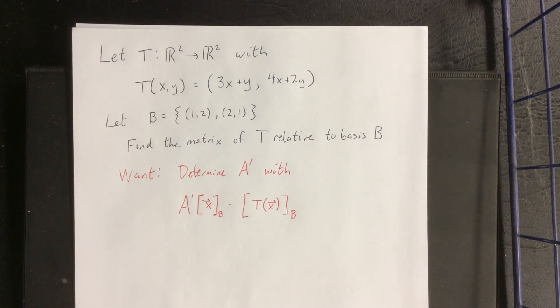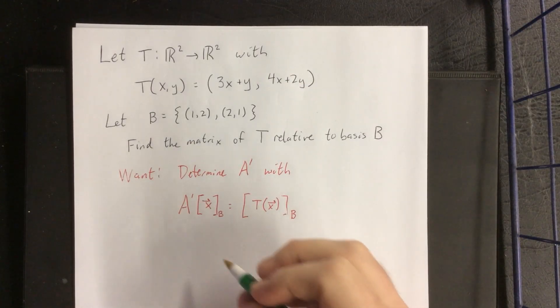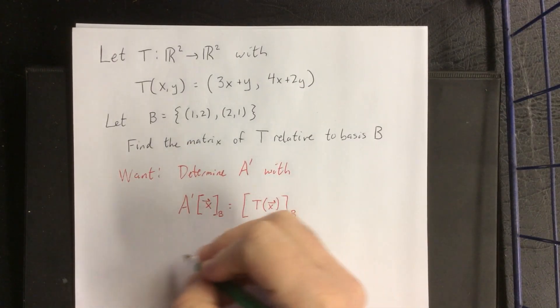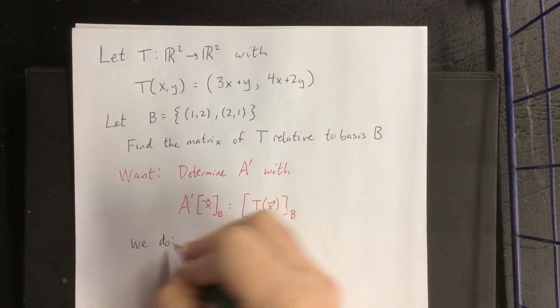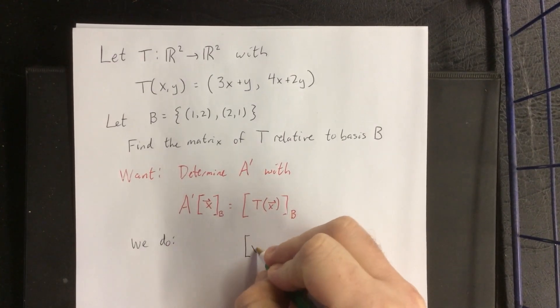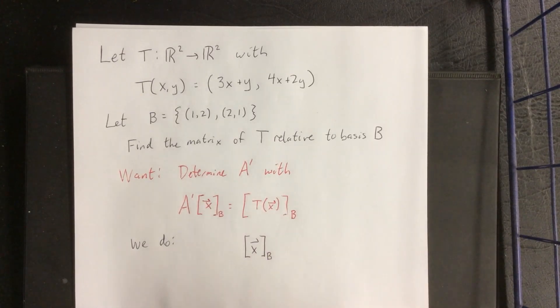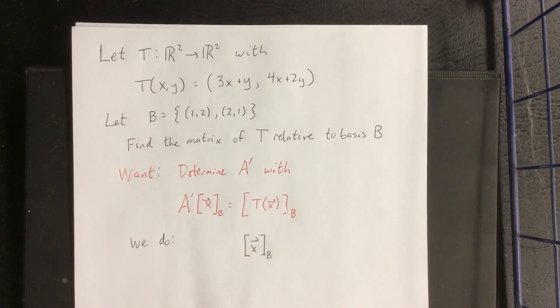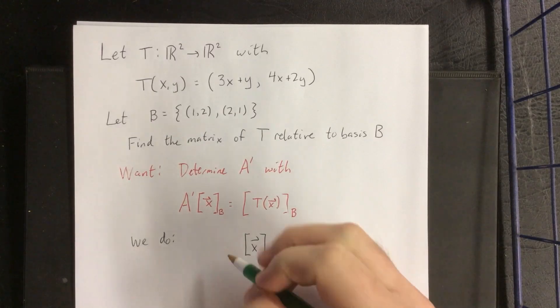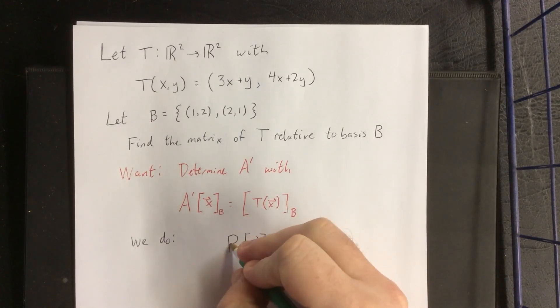Now the way that we're going to do this thing is we're going to take our vector x that is relative to the basis B. First thing we're going to do is transition that back into our standard basis. And the way that we do so is using transition matrix P.